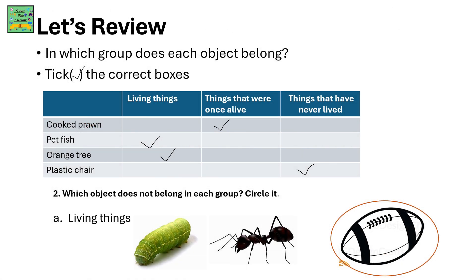Let's Review: In which group does each object belong? A cooked prawn comes under the group of things that were once alive, because the prawn was alive when it was in the sea, but later it died and was cooked. The pet fish comes under living things because it's still alive. The orange tree is not cut and the oranges are not plucked, so the orange tree is still alive and comes under living things.